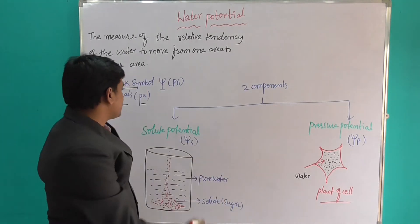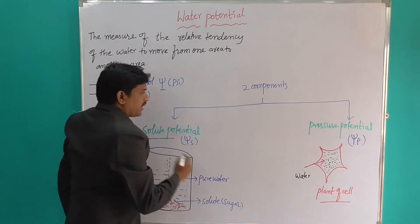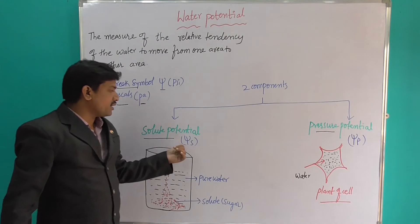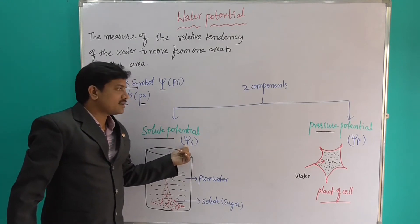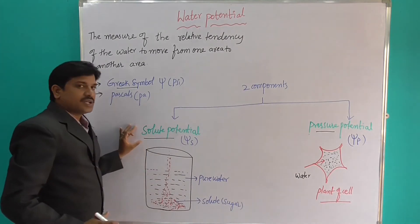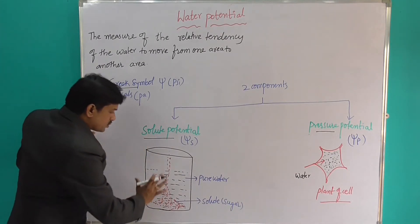The components are: one is solute potential and another one is pressure potential. This solute potential is denoted as psi s (ψs) and pressure potential is psi p (ψp). What is solute potential? Let us discuss.